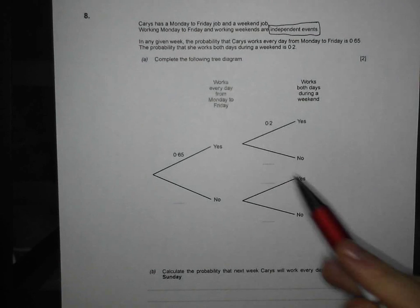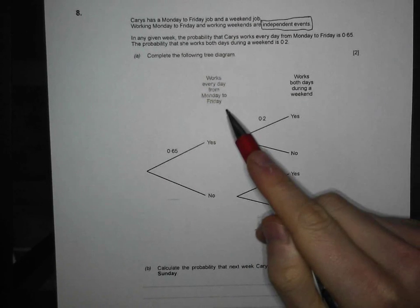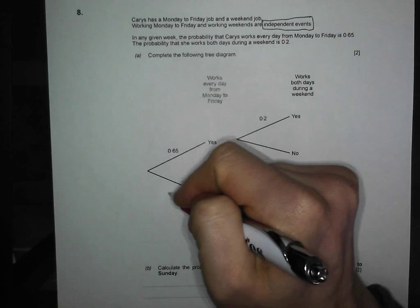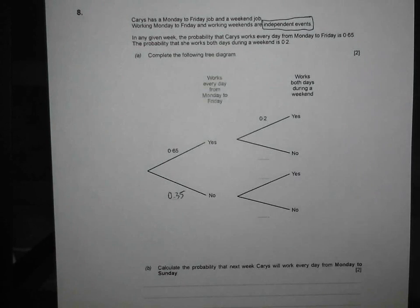Complete the Tree Diagram. So, does she work every day Monday to Friday? Well, the probability she does is 0.65, so the probability she doesn't must be 0.35. Got to add up to 1.